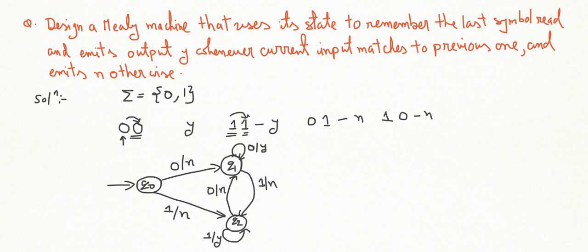We have designed the Mealy machine. So Q = {Q0, Q1, Q2}, output alphabet = {Y, N}, and the transition function δ and output function λ are defined by this transition diagram.